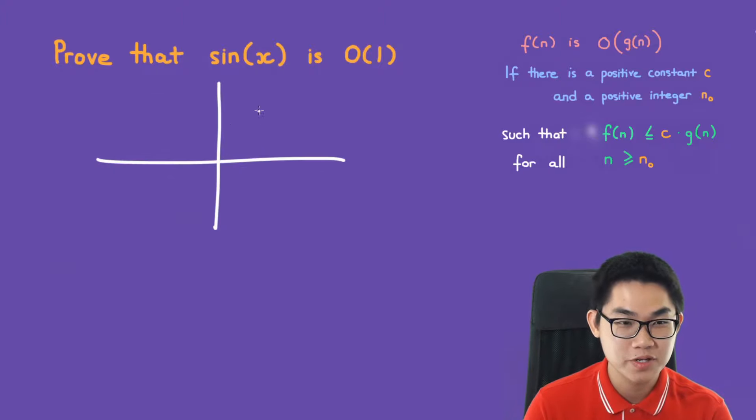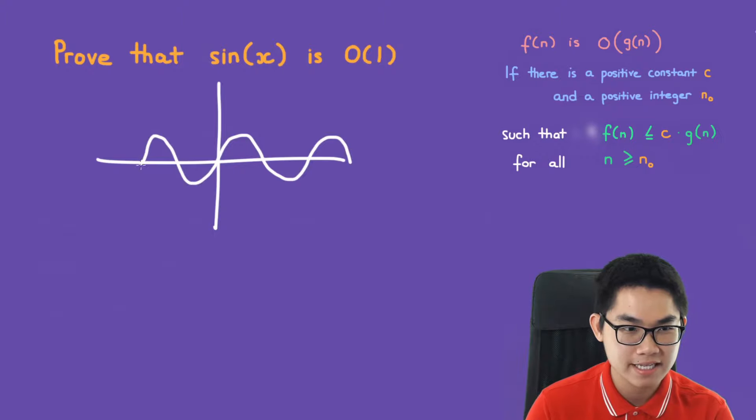If you remember from high school, the sine graph always alternates between 1 and negative 1, just like this.